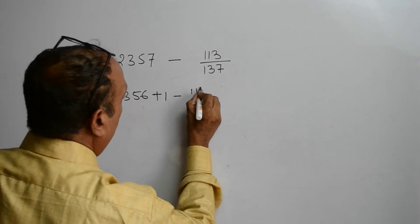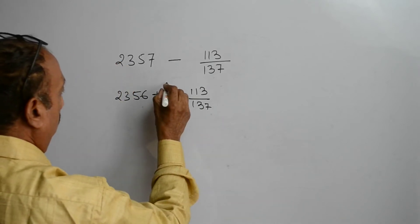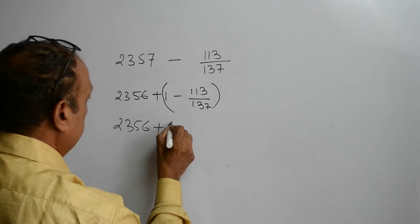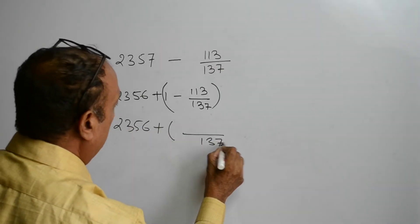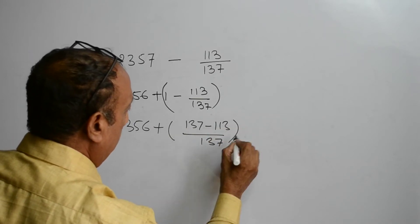So we are going to solve this. 2356 plus 137. 137 minus 113 is equal to 2356 plus 24 upon 137.